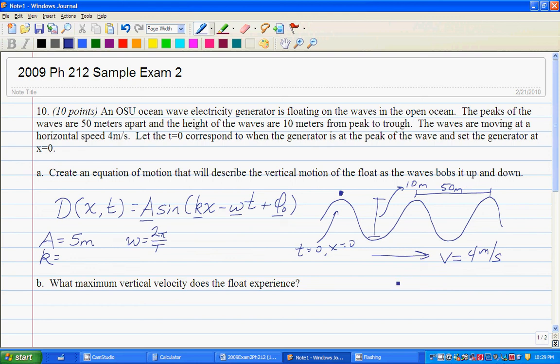The wavelength from right here to here in the problem is given to us as 50 meters. If the wave is traveling at 4 meters per second and the waves are 50 meters apart, we remember that, let's go back to first day of physics 211, that distance is equal to velocity times time. In this case we know that the wave goes 50 meters at 4 meters per second.